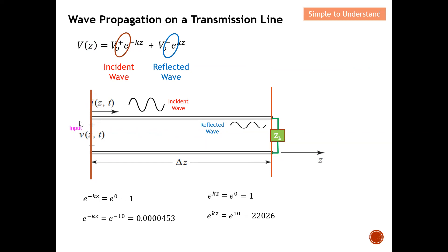Imagine the input is at one end — the electromagnetic wave starts to propagate along the transmission line and when it hits a load, a reflected wave occurs. This is wave propagation on the transmission line: I have my incident wave and I also have my reflected wave if the impedance is not the same. From the extreme cases, you can see that as z increases, the value reduces — the wave becomes smaller and smaller as it moves to the right. Therefore, I conclude that the e^(-kz) term is the incident wave.